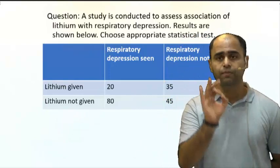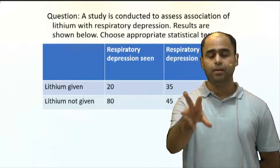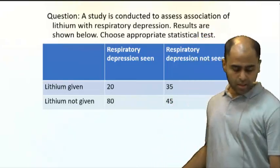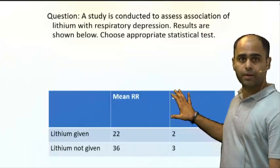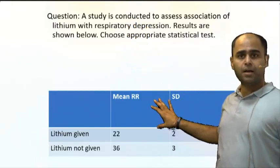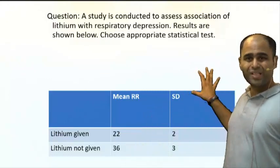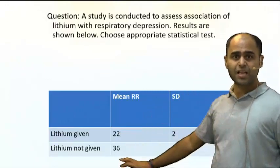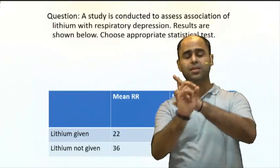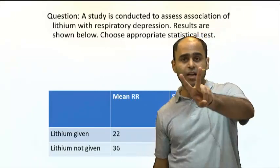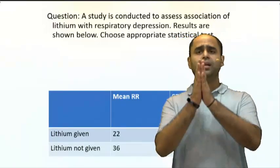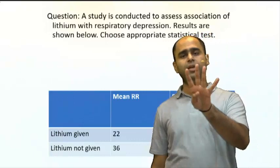Many students see numbers and get confused thinking it to be quantitative — absolutely not. To label a variable as quantitative, you should have a metric scale: kilograms, milliliters, seconds. A variant of this question shows mean respiratory rate of 22 and 36 with standard deviation — that is a quantitative output because mean and standard deviation are given. Be very careful to understand this difference.